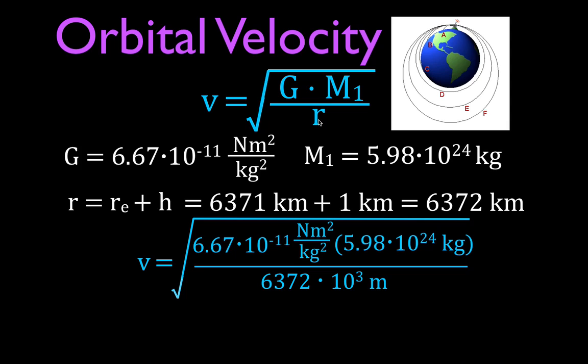It's only really dependent upon the radius, the distance off the Earth's surface. The greater the radius, the lower the orbital velocity. They're inversely proportional to each other. This is a constant. We're talking about the Earth. This is basically a constant also in this case. So really all we talk about usually with the orbital velocity is changing the height.